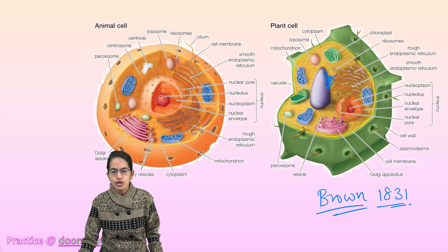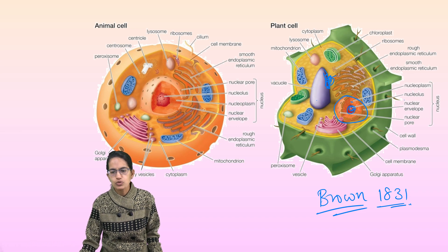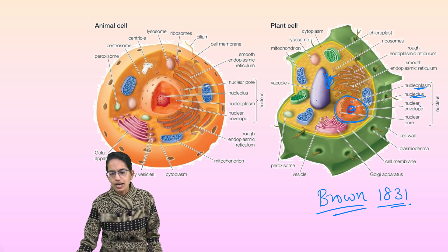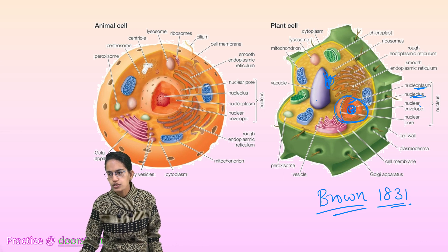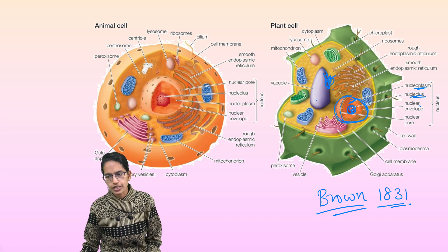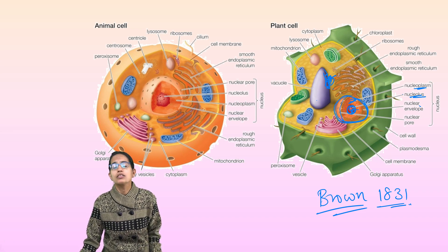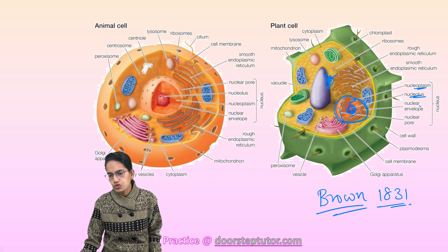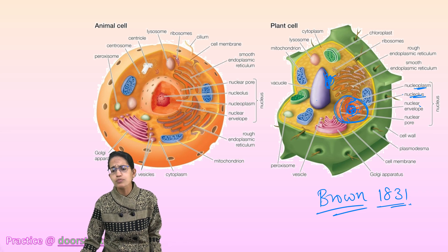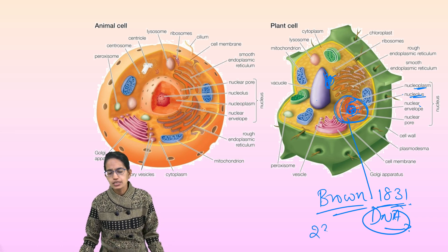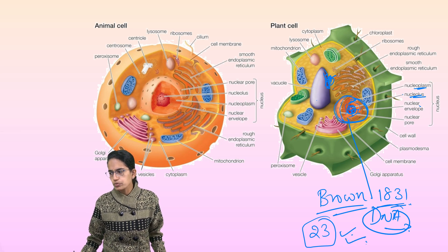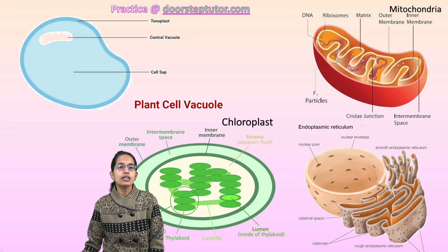Nucleoplasm is also known as nuclear sap, which is the material within the nucleus. Within the nucleus, there is also a small structure known as the nucleolus — a dense rounded material which has a large amount of RNA, hereditary information, and is also responsible for protein synthesis. There are fibers present in the nucleus in the form of chromosomes. Chromosomes carry DNA, which is the unit of hereditary information. In human beings there are 23 pairs of chromosomes. The structure of chromosomes is seen in the chromatin fibers.